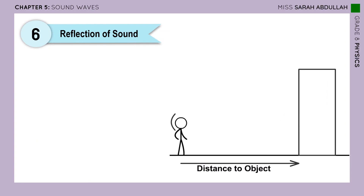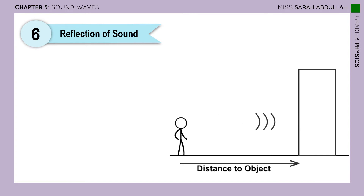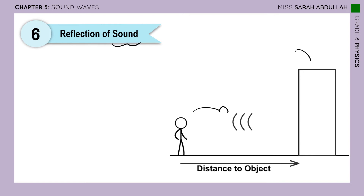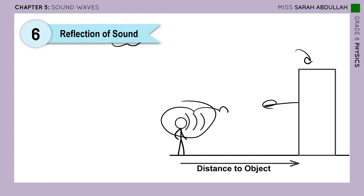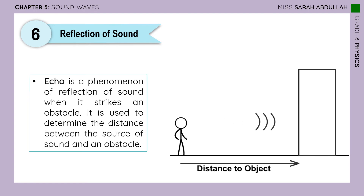Moving on to the reflection of sound. When you say reflection of sound, the first thing that should come to mind is the echo you hear in an empty room or bathroom when you speak or sing and hear your voice repeated. In a big hall, you hear it again and again because sound is a wave that travels, and once it hits an obstacle like a wall, it gets reflected back. This is what echo means — it is a phenomenon of reflection of sound when it strikes an obstacle.